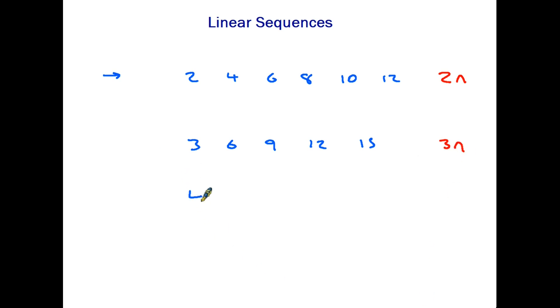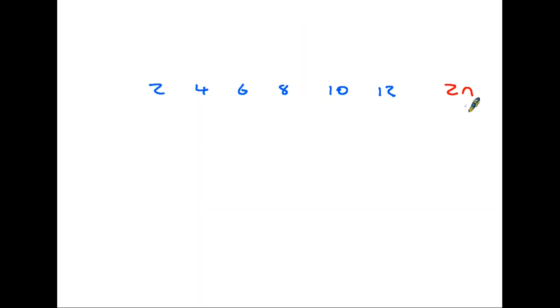This second here is going up in 3s therefore this would be 3n. Similarly if you have the term 4, 8, 12, 16 and so on this one would be 4n. We use the pattern or formula for a sequence in order to be able to find any number within that sequence.